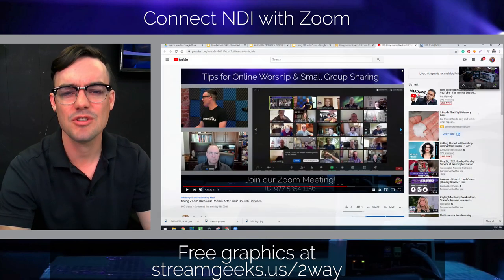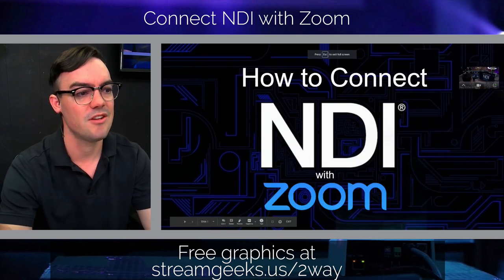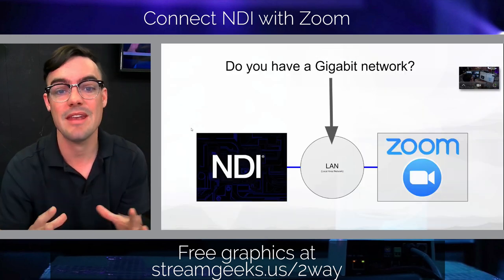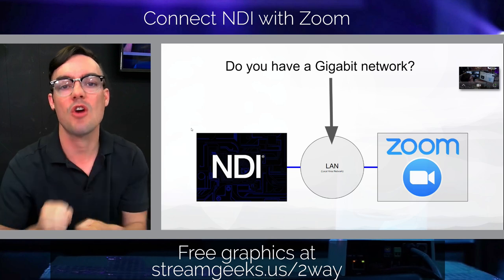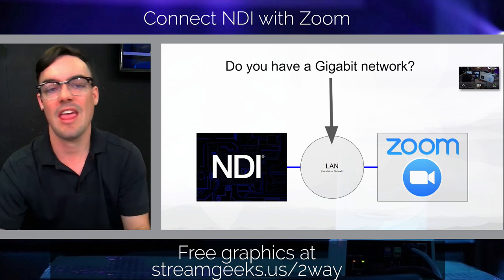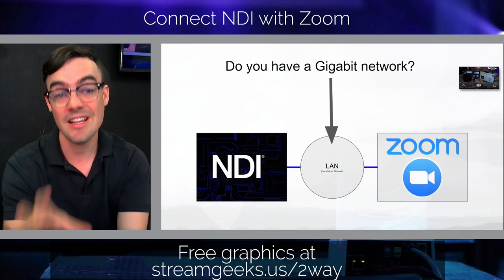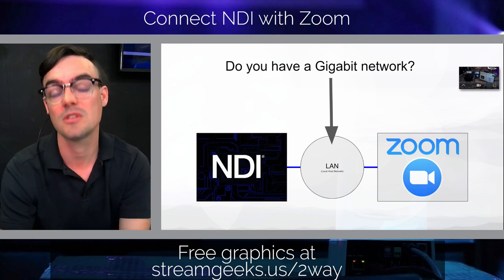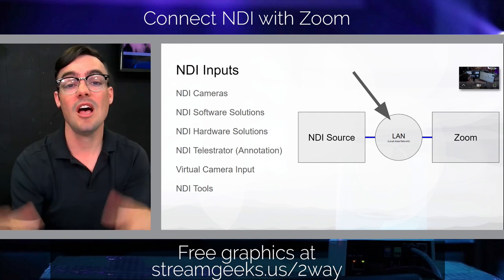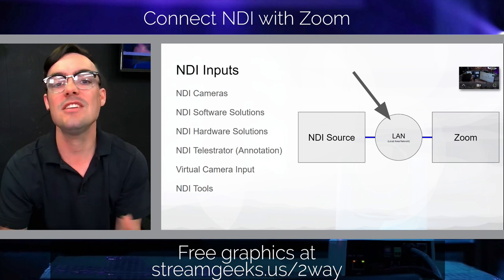So how do you connect NDI with Zoom? First, you do need a gigabit network — a local area network. That means plugging an Ethernet cable into one computer and another into a second computer, with a network switch in between. We have tons of videos on this, and I have an entire free NDI course — I'll put the link below.